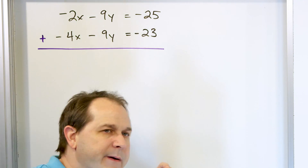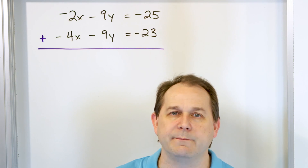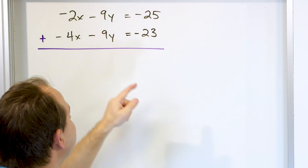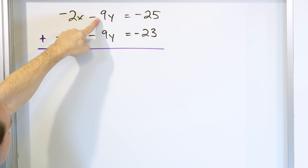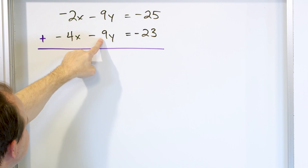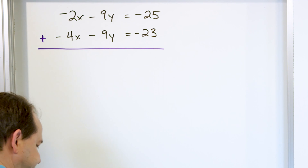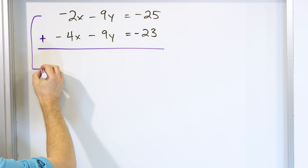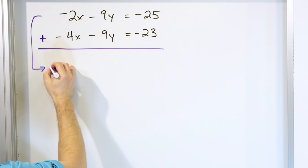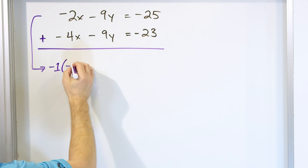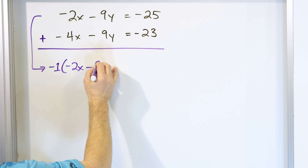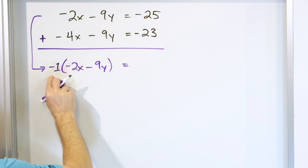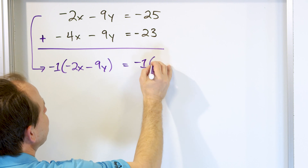It looks different, but we can multiply by negative 1 on both sides because we know we can multiply both sides by anything we want. By doing that, we get a positive 9y, which we can then add to the second equation's negative 9y and make it go to zero. So the actual first step is not to add these things at all — it's to take the top equation and multiply by negative 1, but you have to multiply both sides.